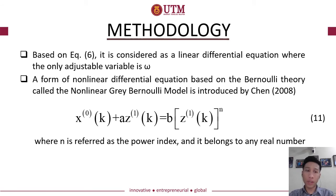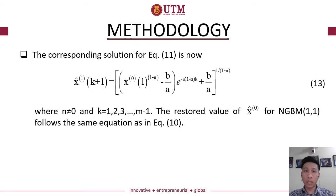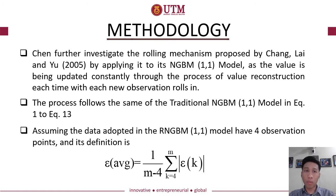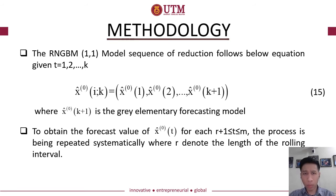There is a form of gray model forecast called NGBM(1,1), introduced by Chen in 2008, following Equations 12 and 13. Furthermore, Chen also investigated a rolling mechanism in the gray model, introduced by Chen, Lai, and Yu in 2005, which involves value reconstruction each time a new observation rolls in. The process is the same as the traditional NGBM(1,1) model in Equations 1 to 13. Assuming we have four observation data points, using the RNGBM(1,1) model the sequence of reductions follows Equation 15.